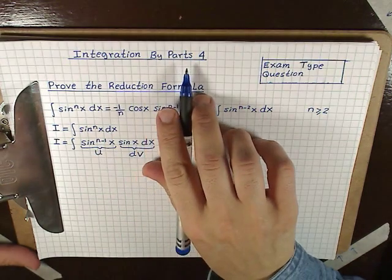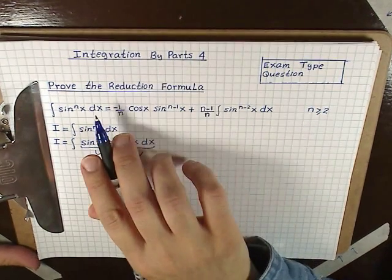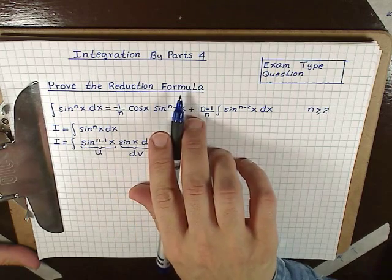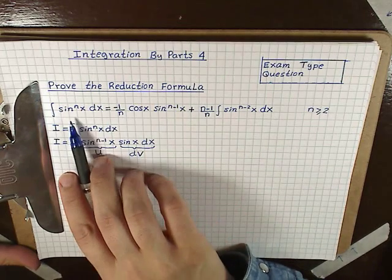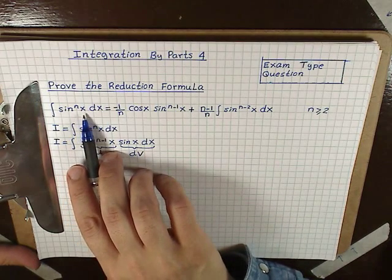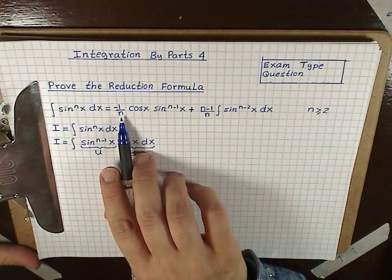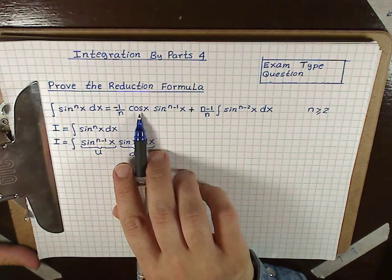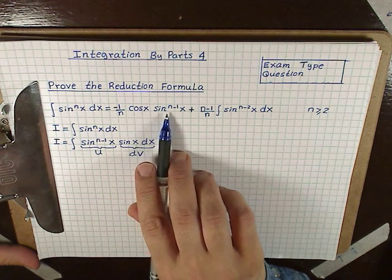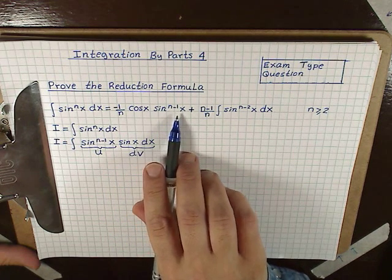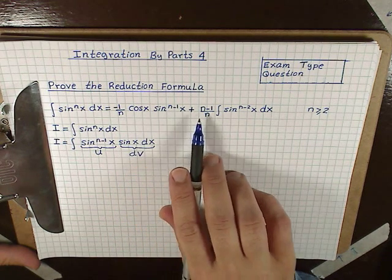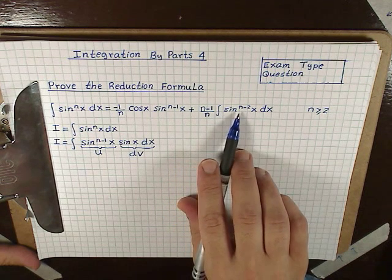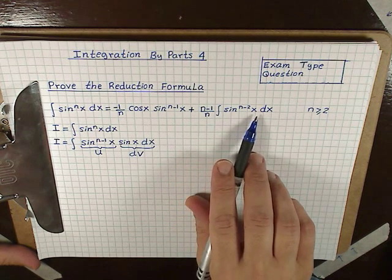Integration by parts 4. Today we're going to prove the reduction formula: the integral of sin^n(x) dx equals negative 1 over n times cos(x) times sin^(n-1)(x), plus (n-1) over n times the integral of sin^(n-2)(x) dx.